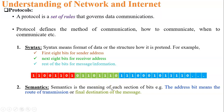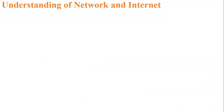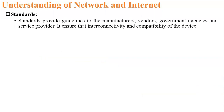The third key element is timing. Timing means at what time data can be sent and how fast data can be sent or received. Based on timing, we refer to internet speeds such as 50 Mbps, 100 Mbps, 1 Gbps, or 30 Mbps — meaning a number of bytes transferred within a second.